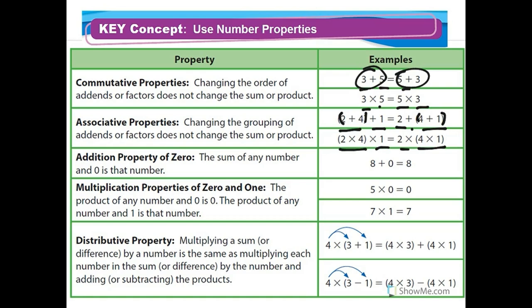Multiplication properties of zero and one: the product of any number and zero is zero — it doesn't matter how large the number is, anything times zero is zero. And the product of any number and one is that number — for example, seven times one is seven.